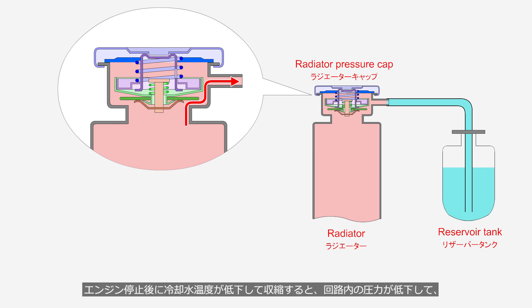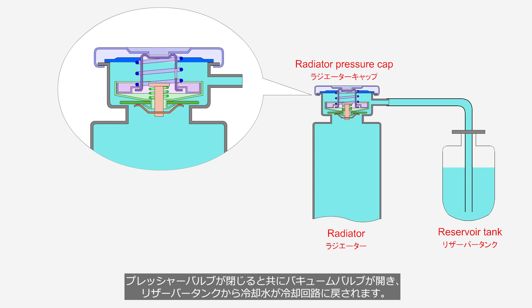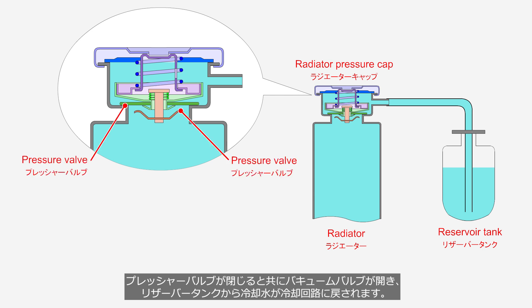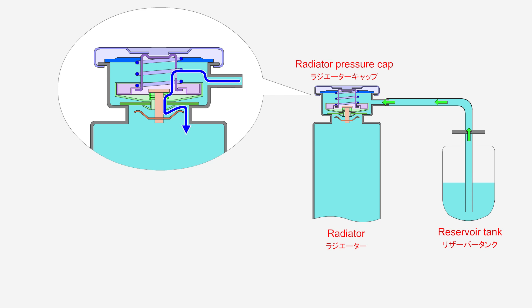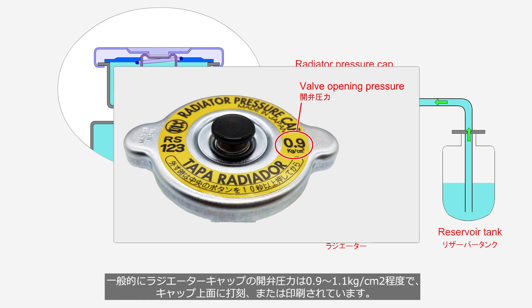After the engine is stopped, the coolant temperature decreases, causing a reduction in volume and a drop in pressure. Subsequently, the pressure valve closes, the vacuum valve opens, and coolant is returned from the reservoir tank to the cooling circuit. Typically, the opening pressure of the radiator pressure cap is around 0.9 to 1.1 kg per square centimeter, and this information is stamped or printed on the top surface of the cap.